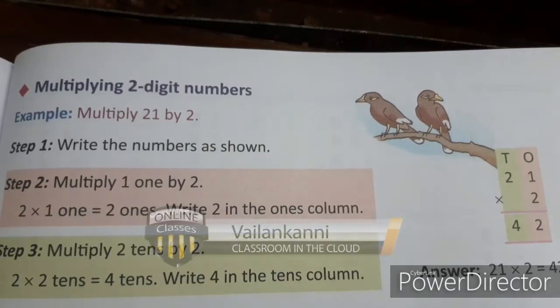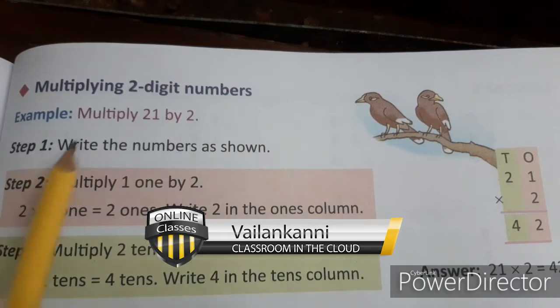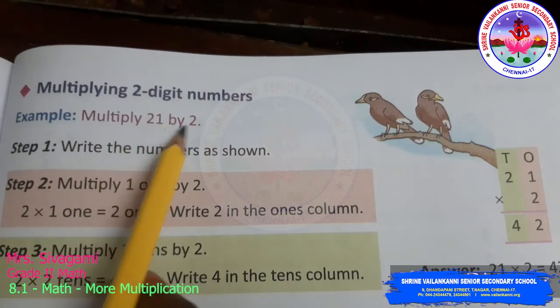Good day children, today we are going to see multiplying two digit numbers. Now they are giving you a sum. Multiply 21 by 2.